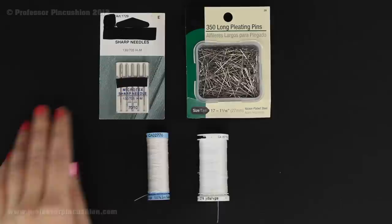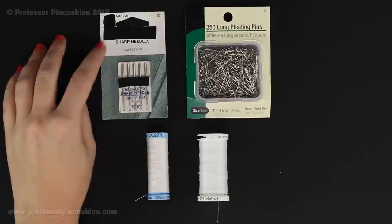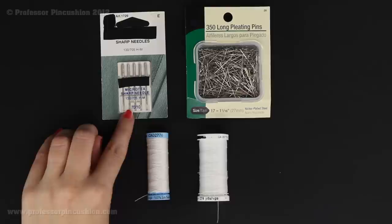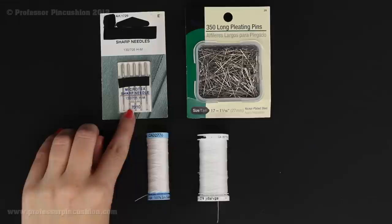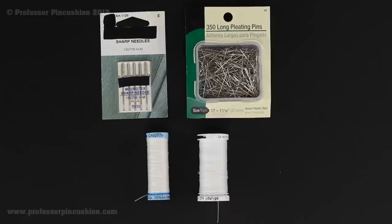When it comes to machine needles, you're going to want to use something that's sharp and lightweight. So I have the sharp needles and for size, you're probably going to want to use a 70 or an 80, depending on the weight. If you're doing a sheer, it's probably going to be more of a 70. And if it's sort of a mid-weight fabric, you can go ahead and do the 80.